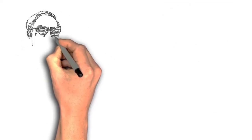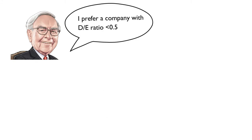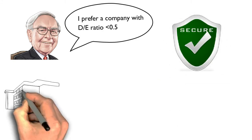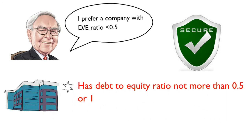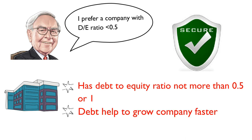The greatest investor, Warren Buffett, prefers a company with a debt to equity of not more than 0.5. Such a company is more secure than one with huge debt. Hence, we should choose a company with a debt to equity of not more than 0.5 or 1. A company with debt helps grow the company faster and the stock will have more value. I hope you understand the theory behind the debt to equity ratio and use it wisely to evaluate a stock.